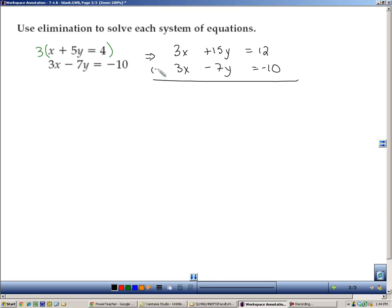Now, the coefficients are the same, so I will subtract those. 3x minus 3x is nothing. 15 minus negative 7, add the additive inverse, that's really 15 plus 7, that's going to be 22y, and then 12 minus negative 10, that's really a plus 10, 22. Divide by 22, and you should get y equals 1.